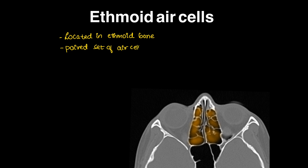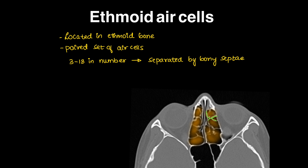Ethmoid air cells are separated by multiple bony lamellae — they are paired sinuses, or a paired set of air cells. There are 3 to 18 normally, separated by bony lamellae or bony septae. These septations divide them into multiple air cells and are called ethmoidal lamellae.